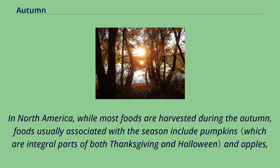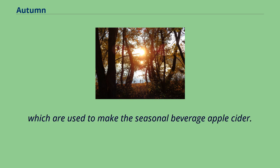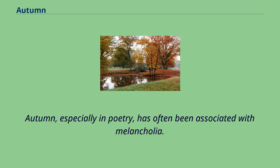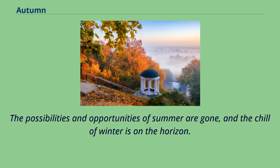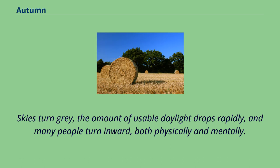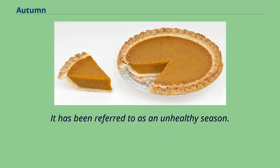In North America, while most foods are harvested during the autumn, foods usually associated with the season include pumpkins and apples, which are used to make the seasonal beverage apple cider. Autumn, especially in poetry, has often been associated with melancholia. The possibilities and opportunities of summer are gone, and the chill of winter is on the horizon. Skies turn grey, the amount of usable daylight drops rapidly, and many people turn inward, both physically and mentally. It has been referred to as an unhealthy season.